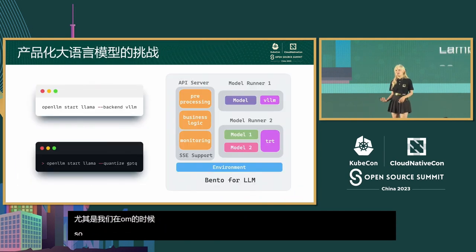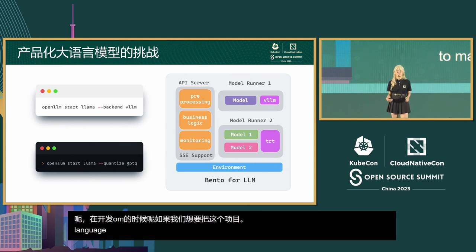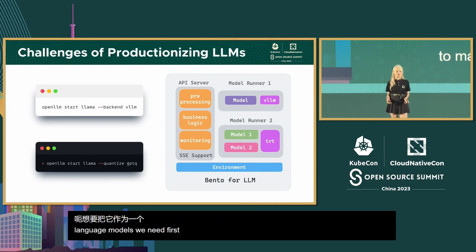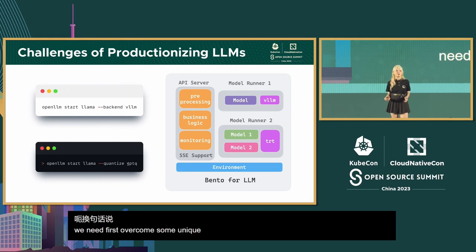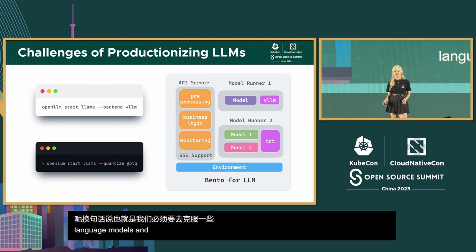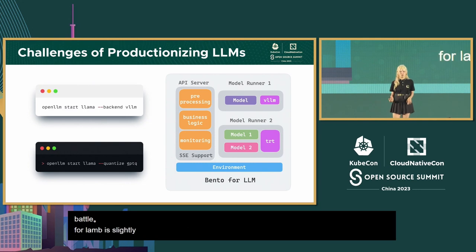In the development of the OpenLLM project, if we want to make it the best practice for language models, we need to first pre-package and pre-optimize the LLMs for our users. In other words, we need to first overcome some unique challenges of language models and pack them as an artifact — a Bento.